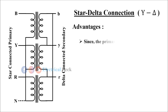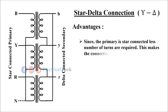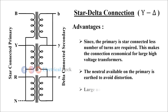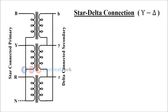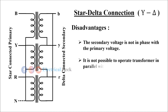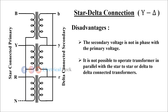The advantages of star-to-delta connection are: since the primary is star-connected, less number of turns are required, making the connection economical for large high-voltage transformers. The neutral available on the primary is earthed to avoid distortion, and large unbalanced loads can be handled satisfactorily. But the disadvantage is that the secondary voltage is not in phase with the primary voltage, and it is not possible to operate this transformer in parallel with star-to-star or delta-to-delta connected transformers.